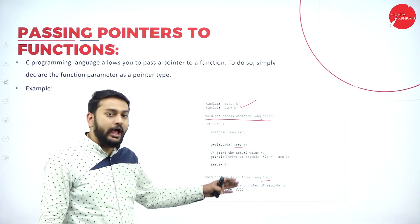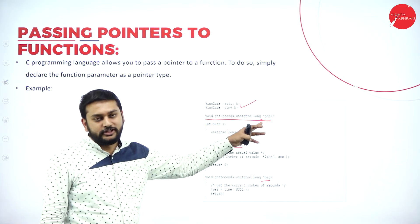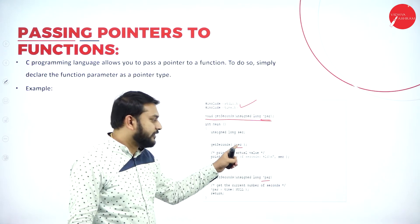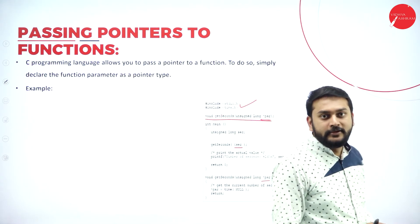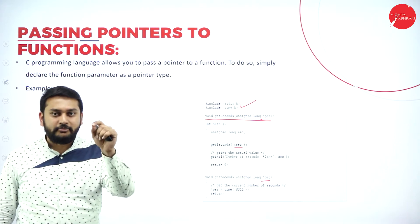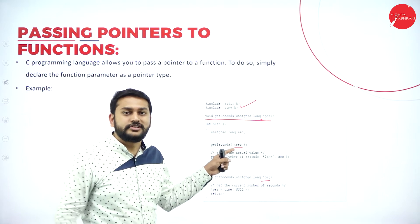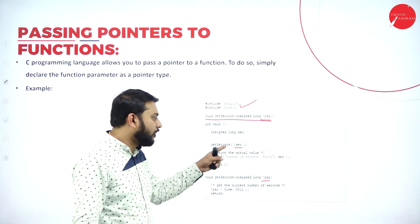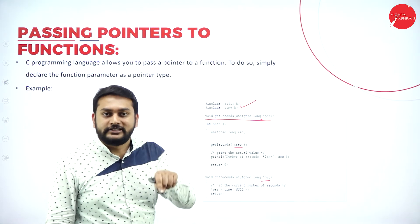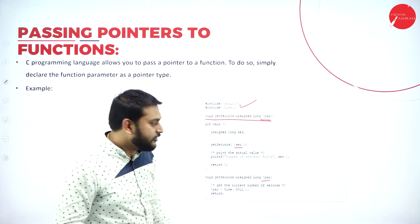If you pass the address of the parameter in the function call, obviously inside the function you should have a pointer variable to receive it. This is what is called call by reference — you are sending the reference, which is the address. So when I want to pass a parameter as an address, in the formal parameters I must have a pointer variable.